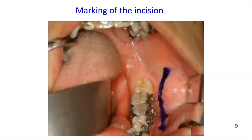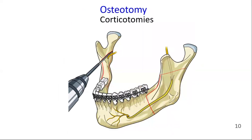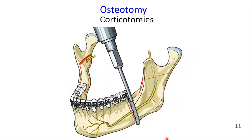Here is the marking of the incision. The procedure starts with three corticotomies. The first cut is made through the lingual cortex a few millimeters above the mandibular foramen, parallel to the occlusion. The corticotomy is extended from the anterior to the posterior border of the ramus. The second cut is made through the buccal cortex in a vertical direction at the level of the first or second molar.